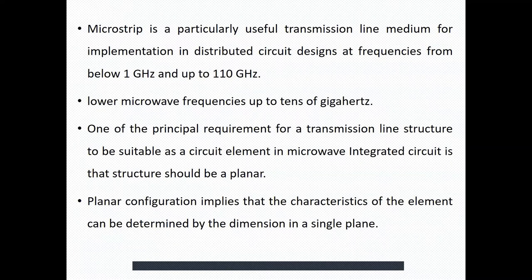Microstrip lines are a particularly useful transmission line medium for implementation in distributed circuits designed at frequencies from 1 GHz to 110 GHz. This is quite a large bandwidth. Lower microwave frequencies extend up to tens of GHz — up to 30 or 40 GHz is considered the lower frequency band. There is no rigid boundary between the lower and higher frequency ranges of microstrip lines.